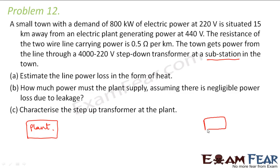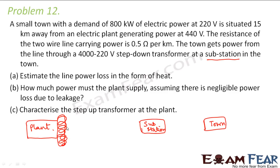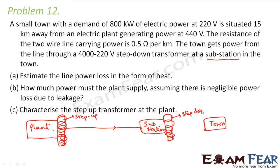This is your power plant, and let us suppose this is the town — somewhere here you have a substation. Near the power plant you have a step-up transformer, which will increase the voltage and decrease the current. It will reach the substation, and at the substation you will have a step-down transformer, which will reduce the voltage and increase the current, and then it will be supplied to the town.